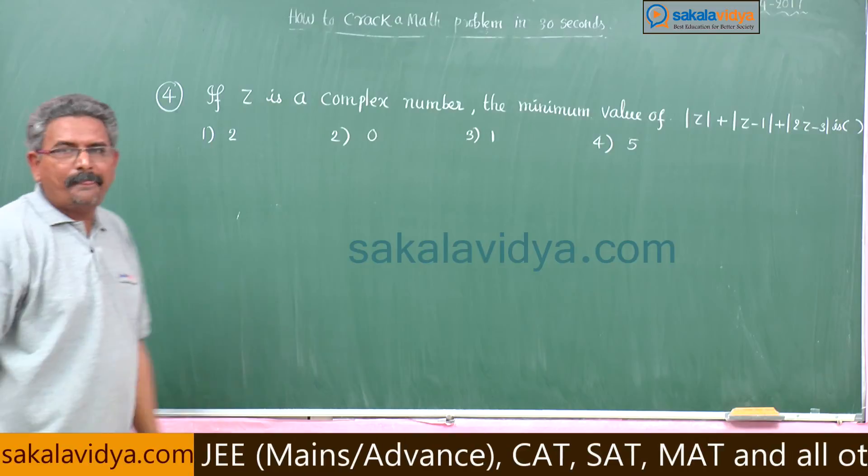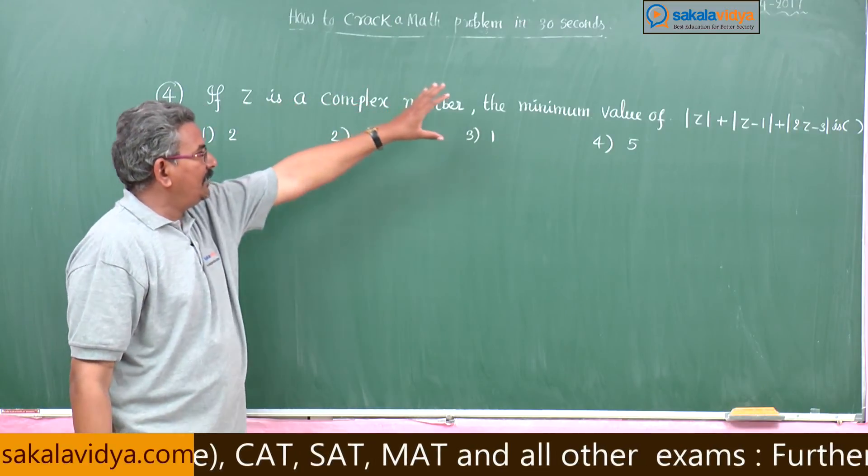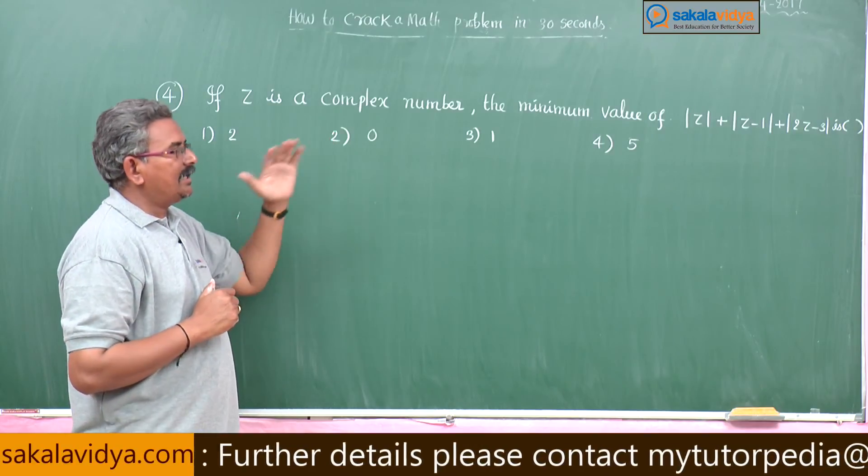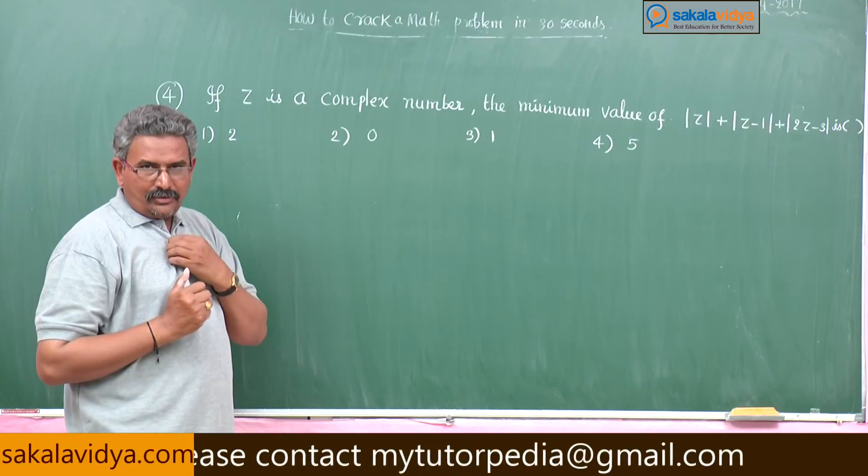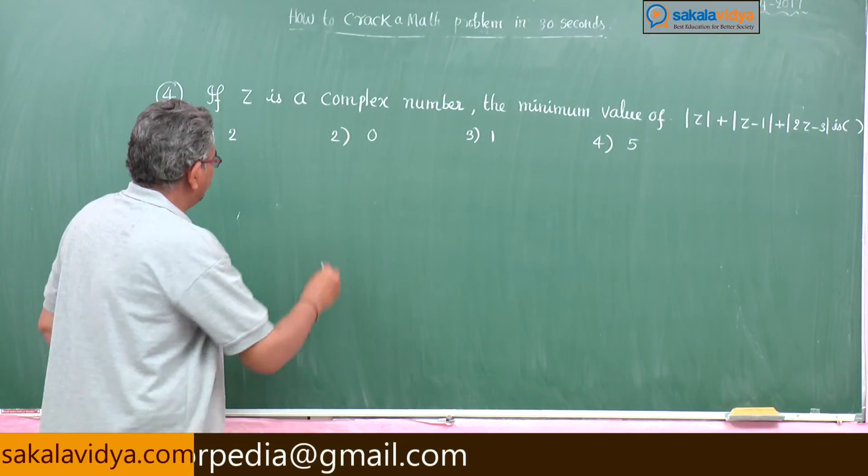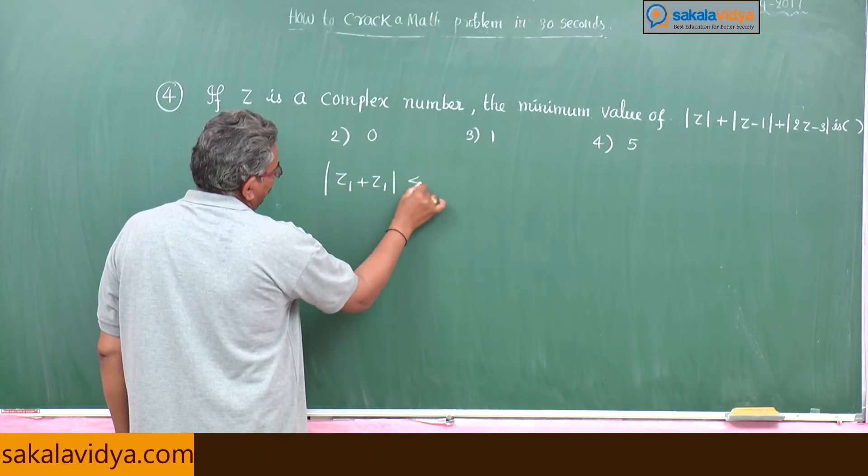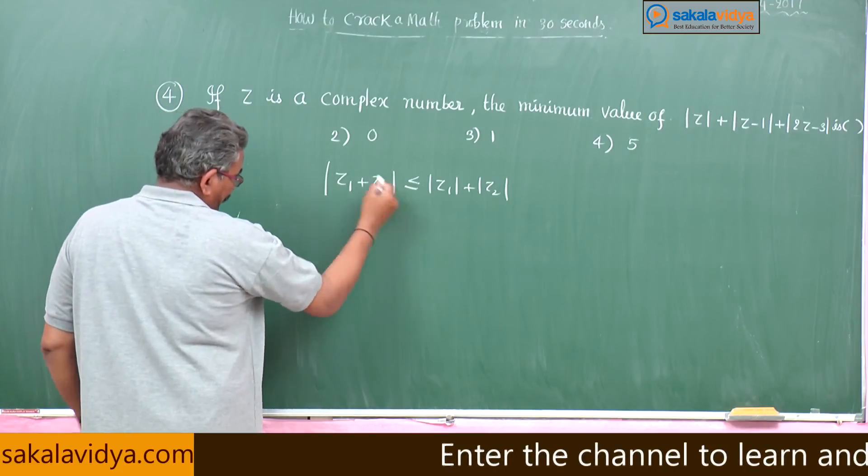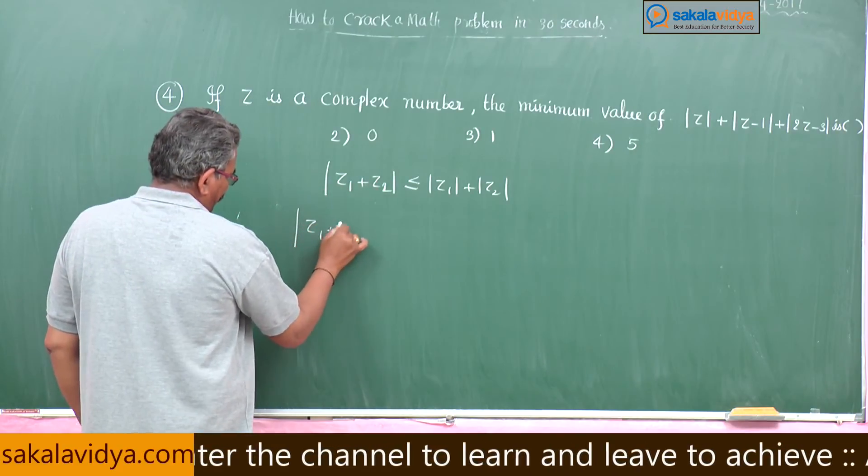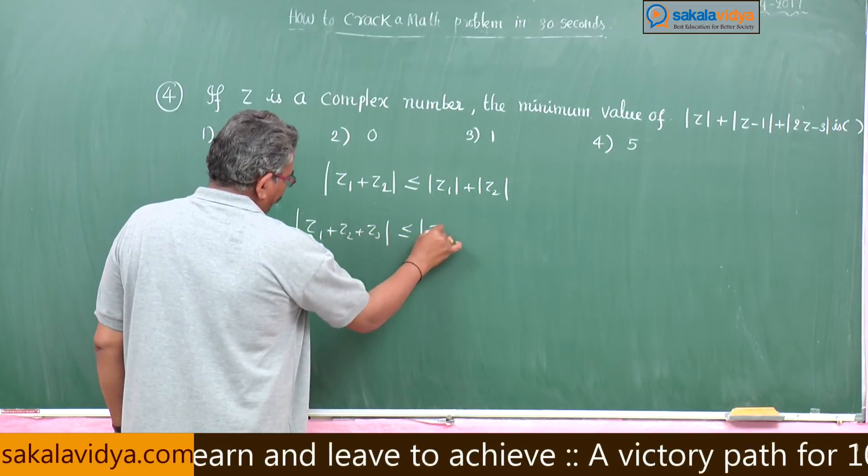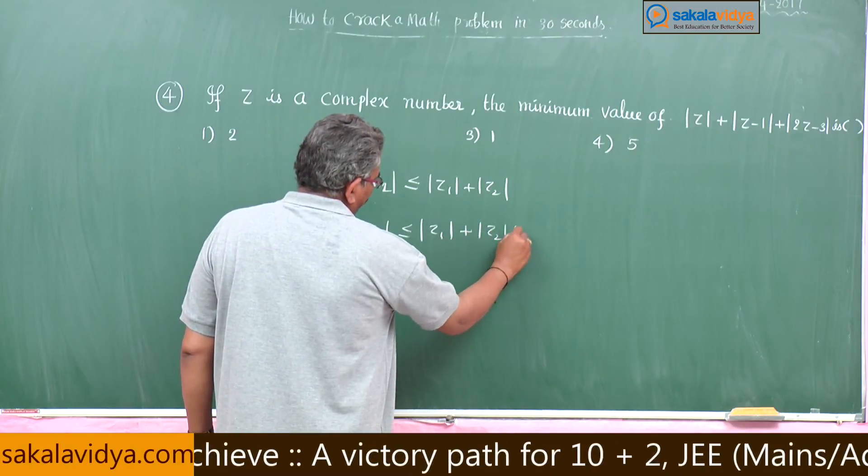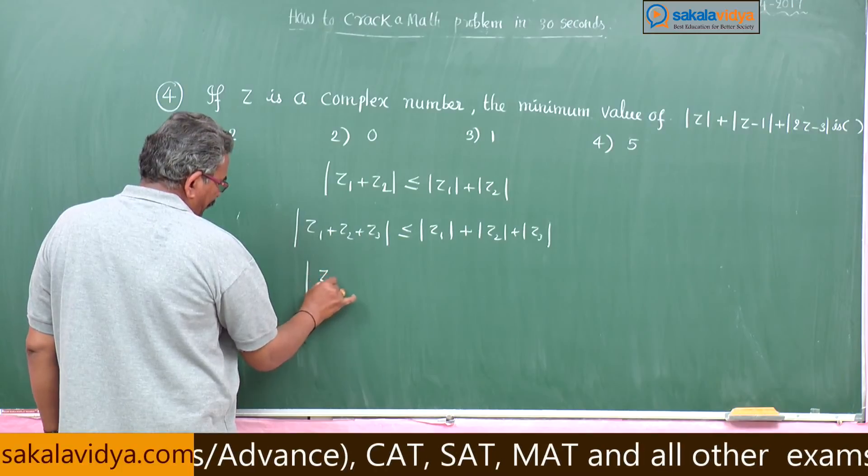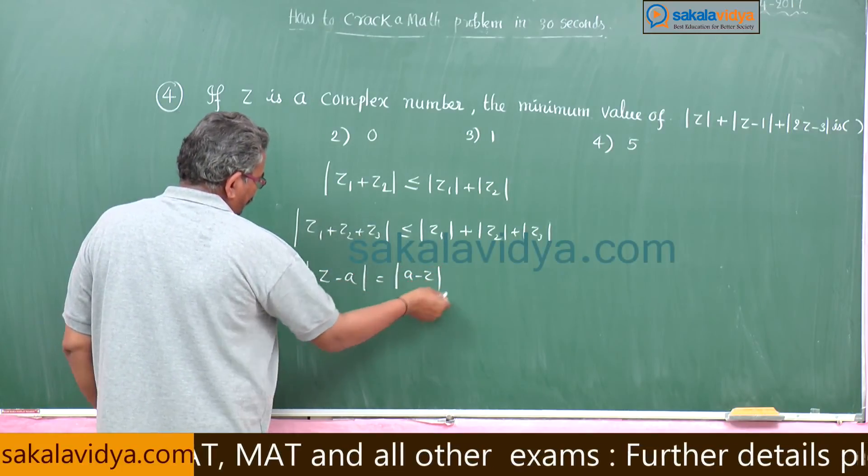So this is very very important problem. If z is a complex number, the minimum value of mod z plus mod z minus 1 plus mod 2z minus 3 we have to find out. So first let us analyze the problem. Here we have to apply triangle inequality. So triangle inequality means modulus of z1 plus z2 is less than or equal to mod z1 plus mod z2. It can be extended for more than two complex numbers also. Modulus of z1 plus z2 plus z3 less than or equal to mod z1 plus mod z2 plus mod z3.